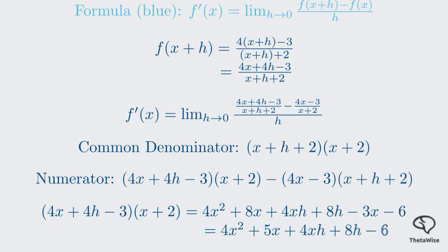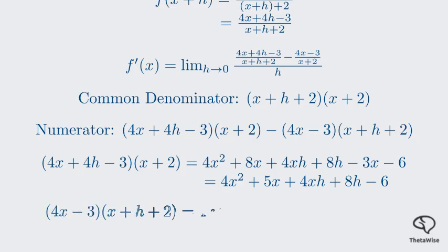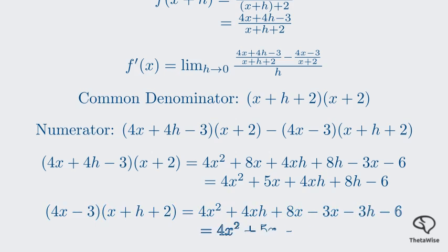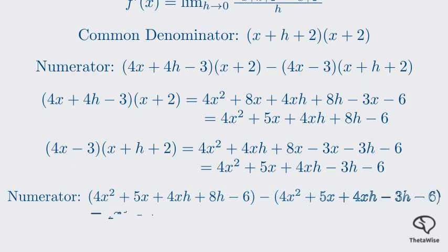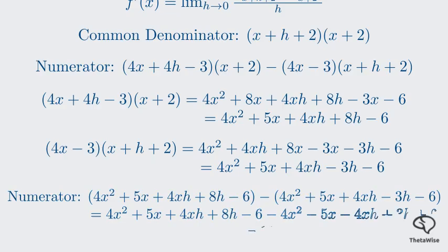Expanding the first set of brackets gives us 4x squared plus 5x plus 4xh plus 8h minus 6. Expanding the second set gives us 4x squared plus 5x plus 4x minus 3h minus 6. It's crucial to keep this in brackets, as we'll be subtracting it. Now we simplify the entire numerator by subtracting the second expression from the first. Notice that many terms cancel out: the 4x squared, the 5x, the 4xh, and the minus 6 all disappear.